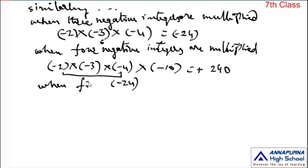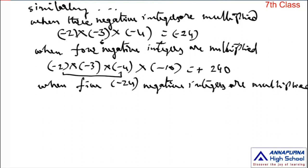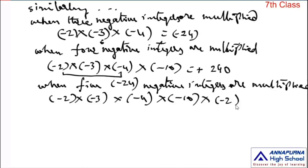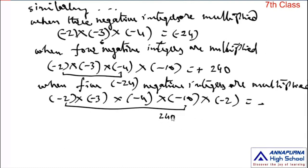When five negative integers are multiplied, take minus 2 into minus 3 into minus 4 into minus 10 into minus 2. We know minus 2 into minus 3 into minus 4 into minus 10 equals plus 240. Now 240 into minus 2 — product of a positive and negative gives negative — 240 times 2 is 480. So we get negative 480. When five negative integers are multiplied, we get a negative result.